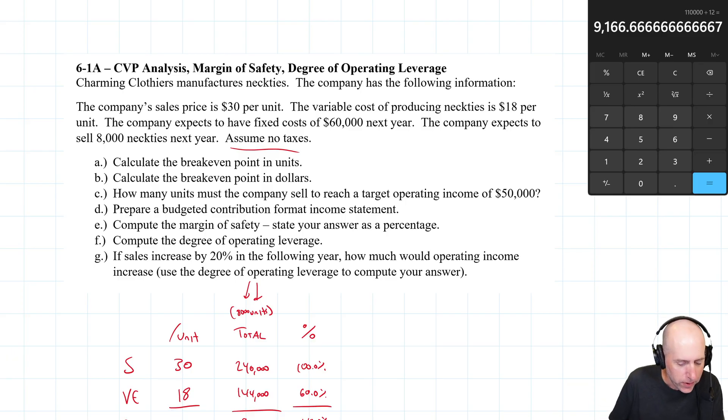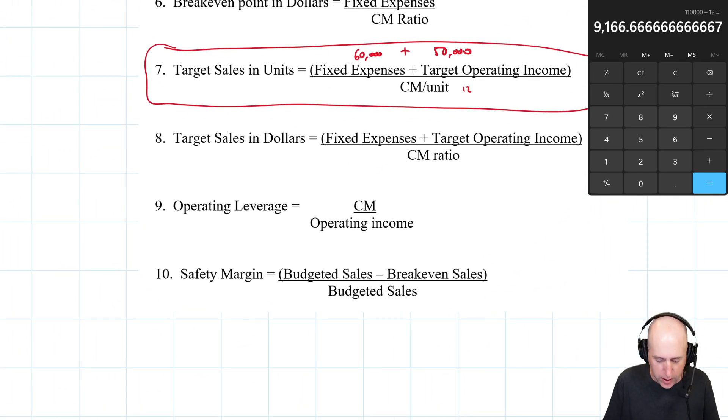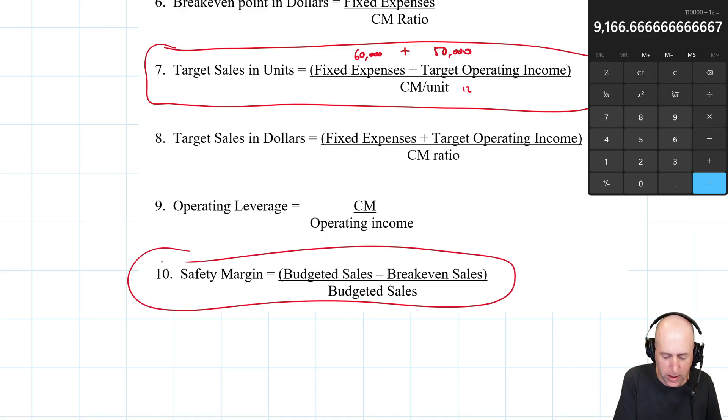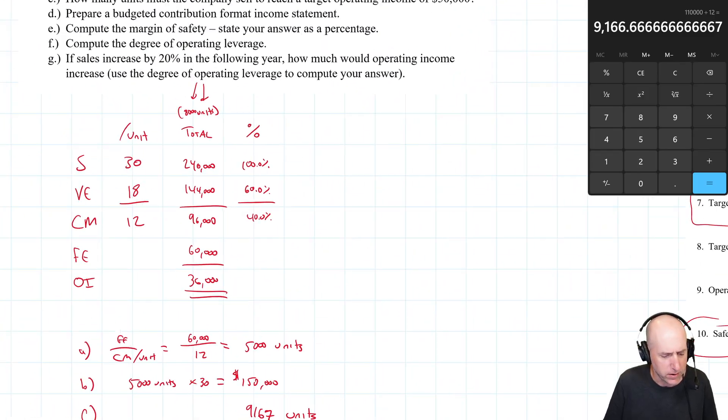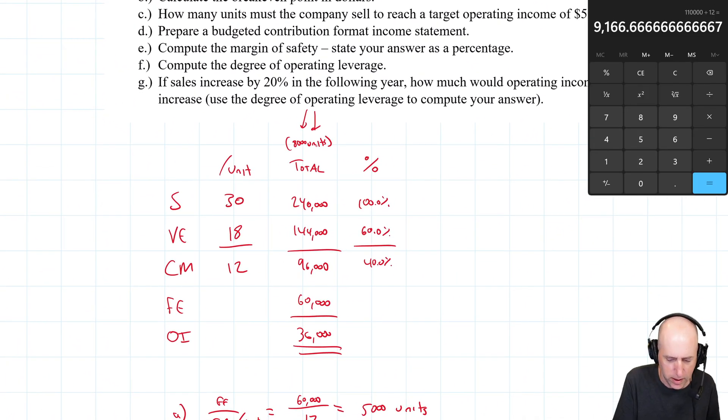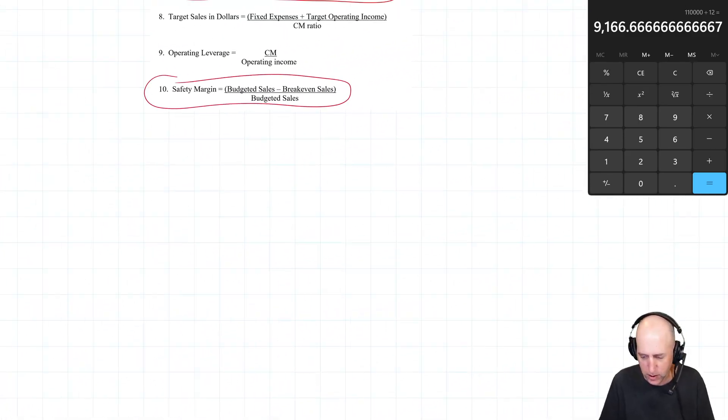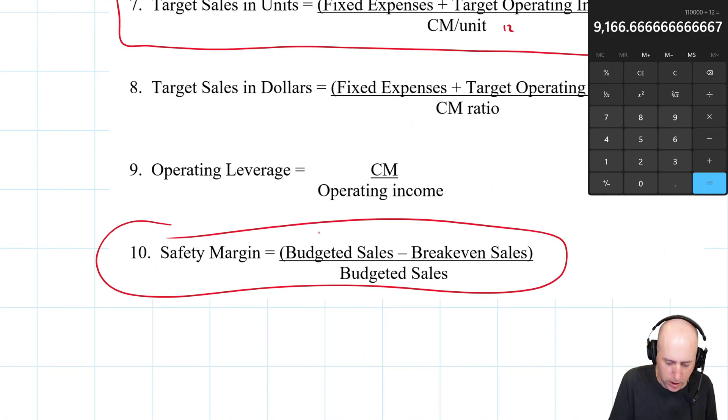Let's do E. Compute the margin of safety, state your answer as a percentage. Margin of safety is budgeted sales minus breakeven sales divided by budgeted sales. That's this formula here. What is our budgeted sales? Our budgeted sales, we expect to sell 8,000 units, so $240,000. What about our breakeven sales? We got the answer to part B, $150,000. That's how much I have to sell to breakeven.